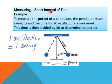Measuring a short interval of time. Example: To measure the period. Period is the time for one oscillation or one swing of a pendulum. The pendulum is set swinging and let it swing for a couple of swings. Then you time it for twenty oscillations. This time is then divided by twenty to give you the time for one swing, which is the period.